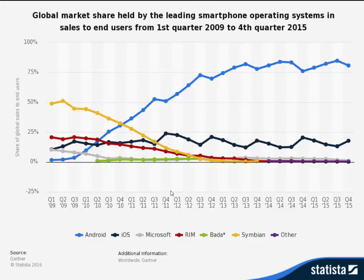Returning to mobile device operating systems, Android has gained a lot of popularity due to its installation on Samsung flagship devices, while Symbian indicated a decline because Nokia did not incorporate newer technologies or graphical user interfaces, losing a lot of customers as a result.